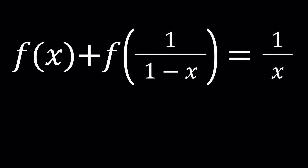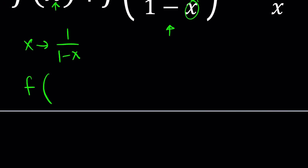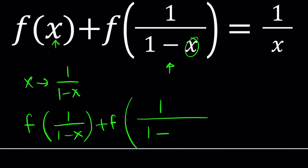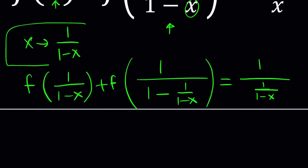Anyways, to solve this problem, here's what I'm going to do. Since I have f(1 over 1 minus x) in this equation, I'm going to replace x with that — specifically, replace x with 1 over 1 minus x. That'll give me f(1 over 1 minus x) on the left-hand side, but then I'll be getting something else. Let's find out what happens. We need to make that replacement everywhere consistently. That's the first substitution we use.